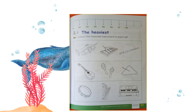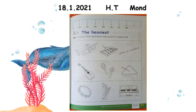Here is page number 39. Write the same date at the top of the page: 18.1.2021, space, H.T., space, and the day is Monday. Then come to the number line — the last two numbers are missing: 19 and 20. Complete your number line.